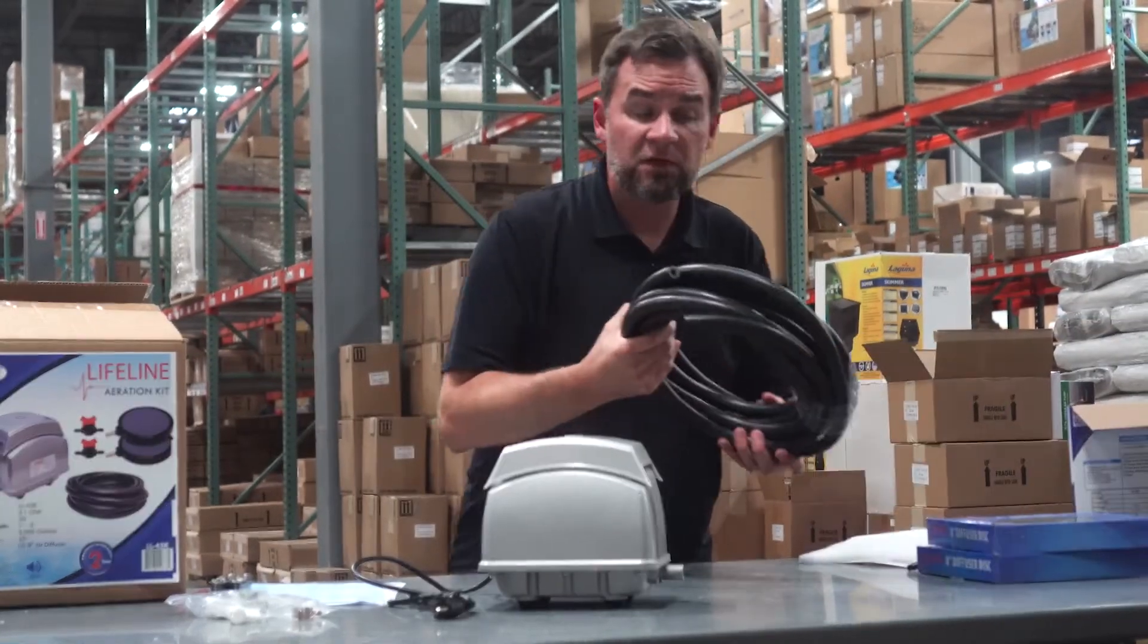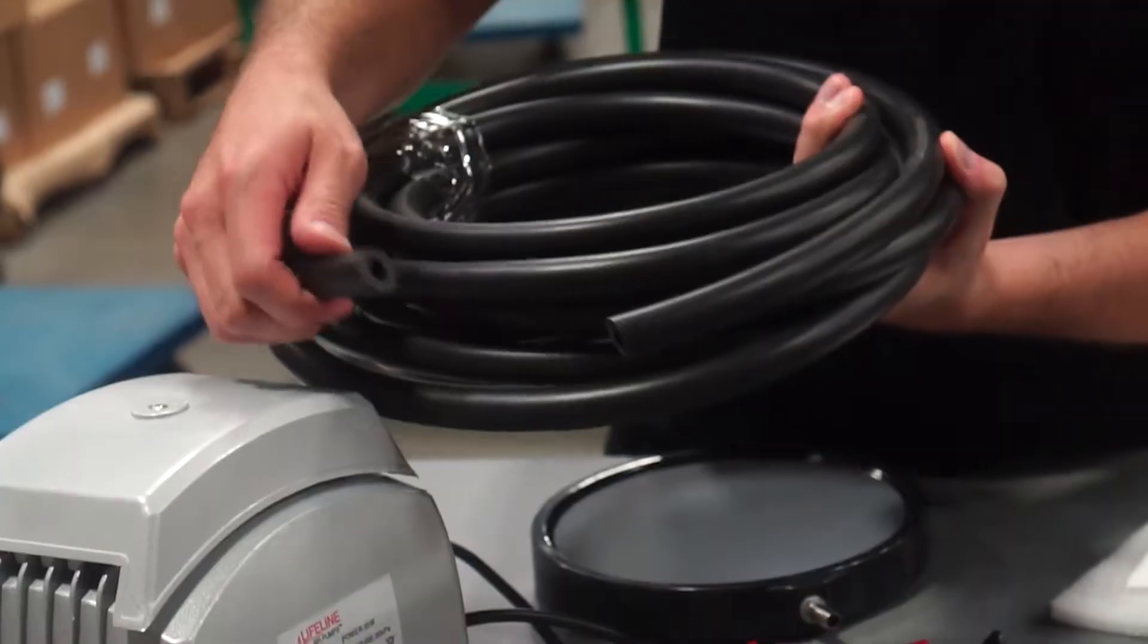You've got 25 feet of weighted 3 1/8 inch airline tubing.